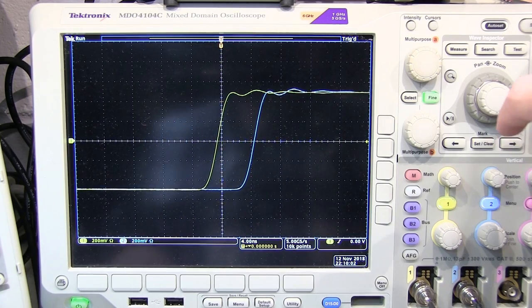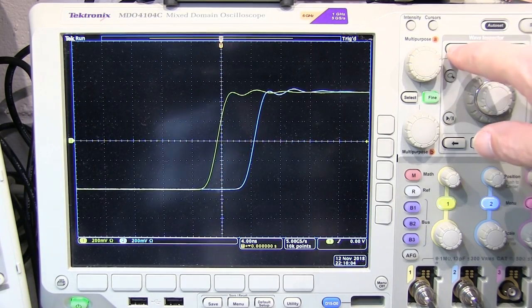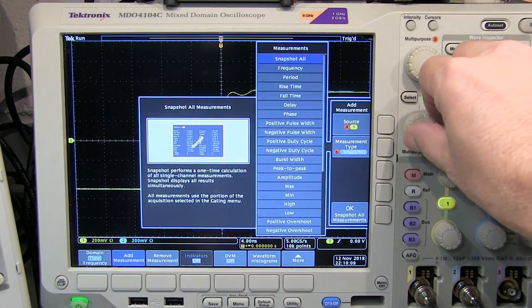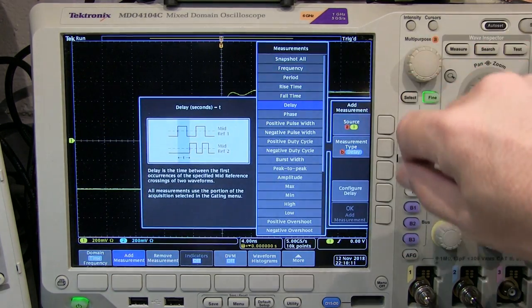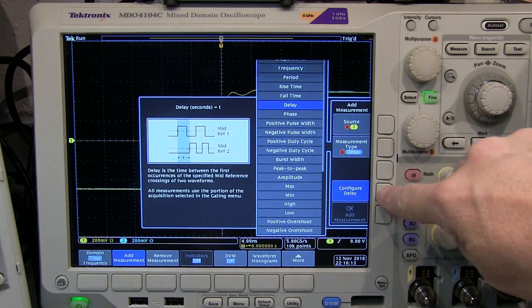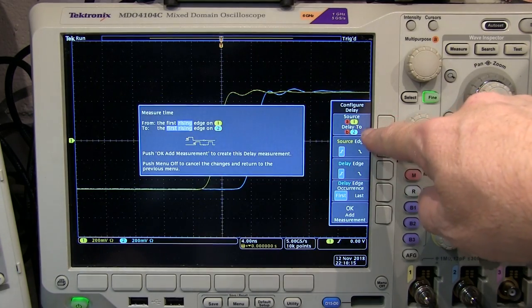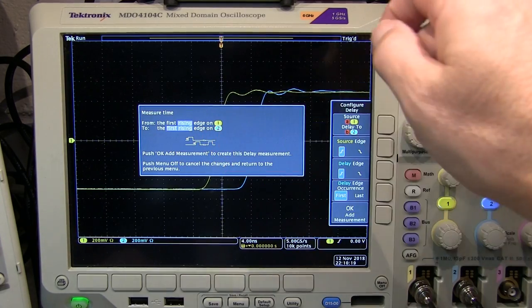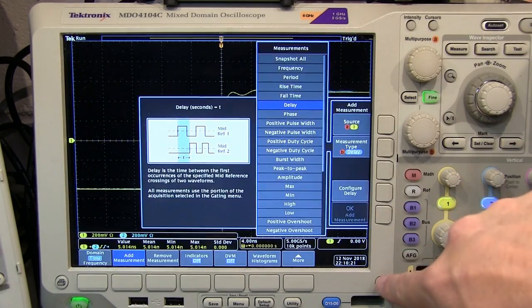Okay, so we've got those same two signals now applied to the scope. Let's turn on measurements, and we'll go add a measurement. And let's scroll down and find the delay measurement. And we'll configure that. We said we want to measure from the first rising edge of channel 1 to the first rising edge of channel 2. So we'll add that measurement in.